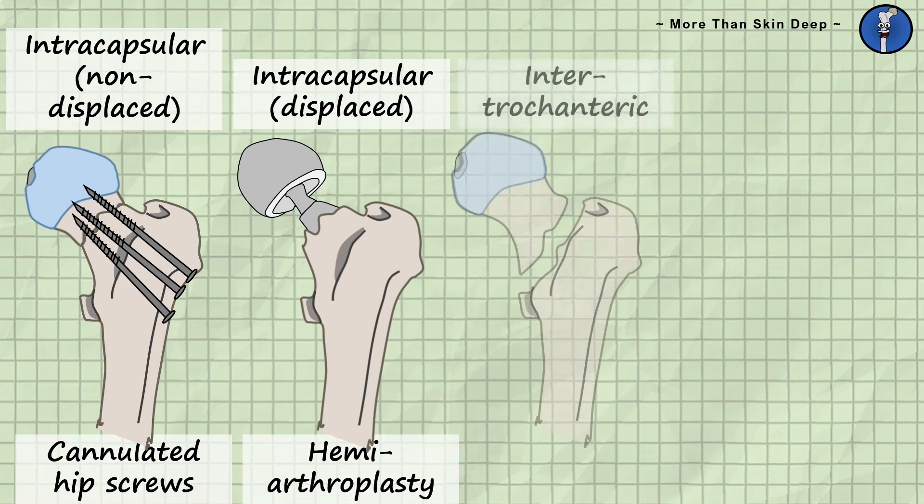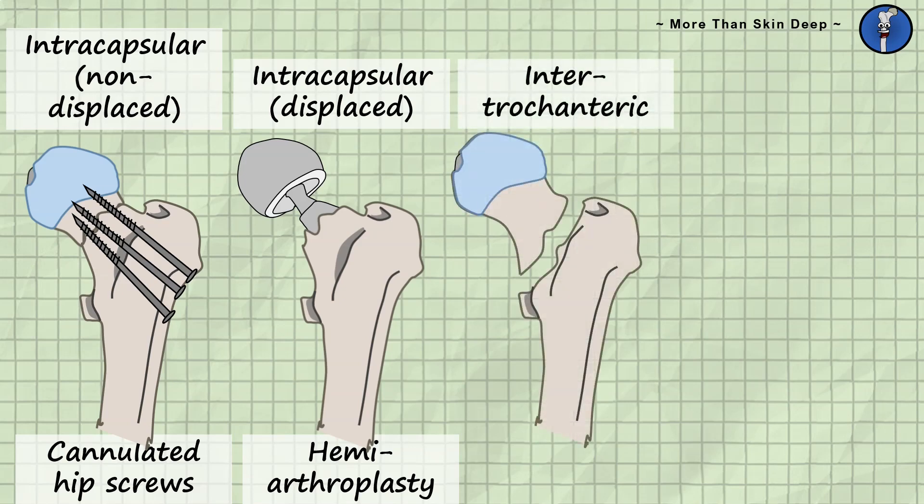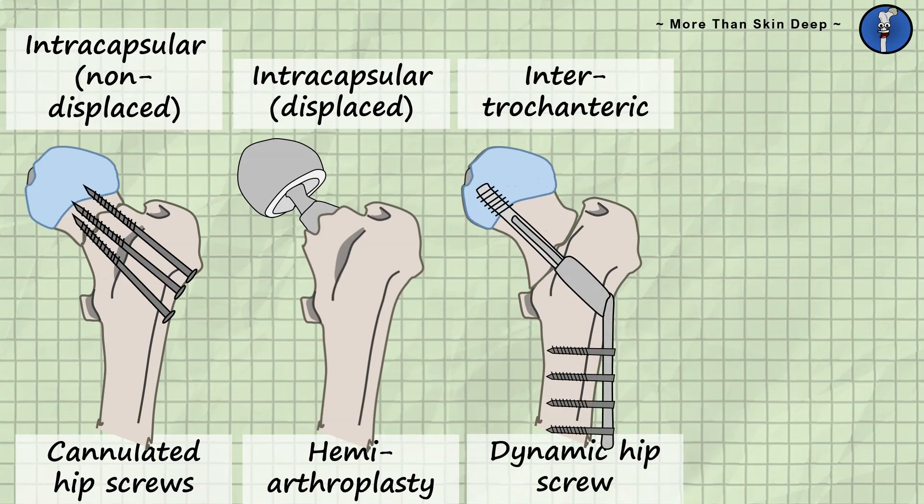When the fracture is intertrochanteric, you can use a dynamic hip screw, which allows some sliding of the two parts. The compressive action encourages healing of the bone and generally has good outcomes.